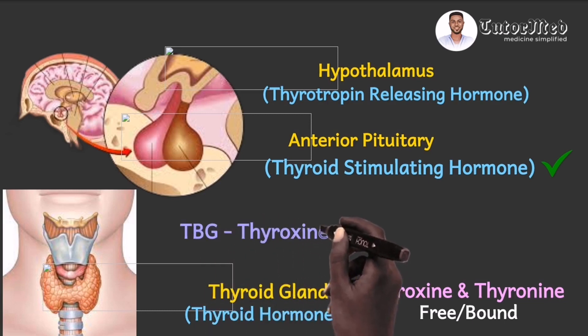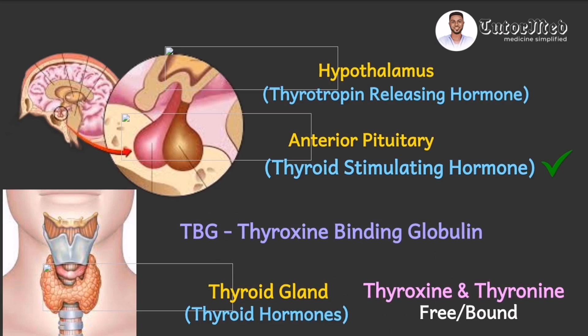Some of the thyroid hormones in circulation are bound to a protein known as thyroxine-binding globulin, or TBG. It is the free thyroid hormones which are metabolically active — the bound hormones are not. In summary, the hypothalamus releases TRH, which tells the anterior pituitary to release TSH, and the TSH tells the thyroid gland to release thyroid hormones. A small free fraction remains unbound and is metabolically active.